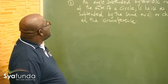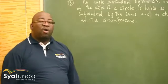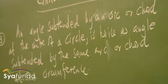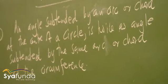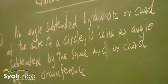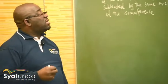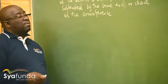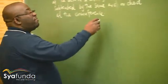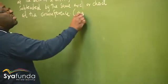This theorem says an angle subtended by an arc or a chord at the center of a circle is twice the angle subtended by the same arc or chord at the circumference. It's important that we mention the position. When we abbreviate this, we simply say 'center theorem'.